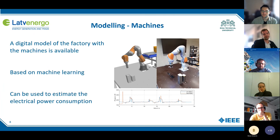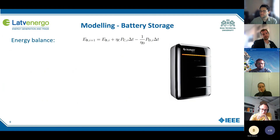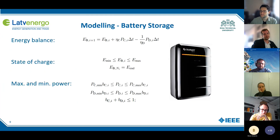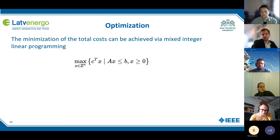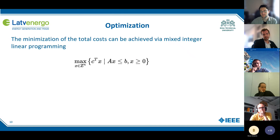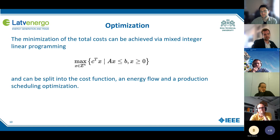This is then used as the digital twin. Next we can see the model of the battery storage. For the battery storage, we can just write the energy balances. Using the digital twin model and the energy balances, we can then optimize the system. For the optimization, we are using mixed-integer linear programming. This has the benefit that it's fast and finds the global minima. The optimization problem can be split into the cost function, an energy flow optimization, and a production scheduling optimization.